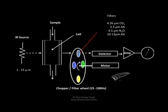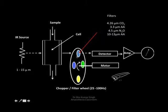If you look at the gas monitors, they consist of an infrared source which transmits infrared light at 1 to 15 micrometers, and this light passes through a sample chamber and also through a reference chamber. Then we have a filter wheel which rotates at a frequency of 25 to 100 hertz, with filters for carbon dioxide at 4.26 micrometers, anesthetic agent at 3.3 micrometers, nitrous oxide at 4.5 micrometers, and a second filter at 10 to 30 micrometers. The light then passes through detectors and then the display.